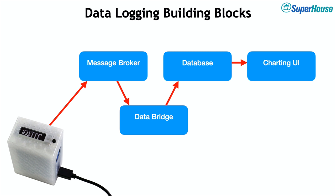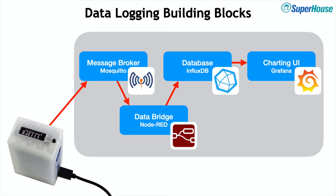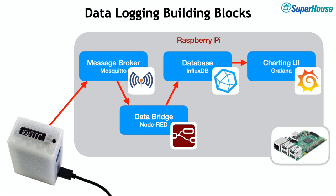Each of these four building blocks has many different alternatives. For this example I'm going to use the Mosquitto MQTT message broker, Node-RED for the data bridge, InfluxDB to store the data, and Grafana for charting. We also need a computer to run all of this on. This could be across multiple machines or hosted in the cloud, but for this example we're just going to use a Raspberry Pi and install everything on the same device.